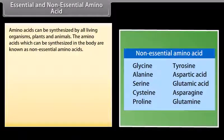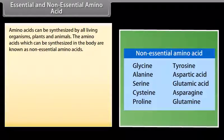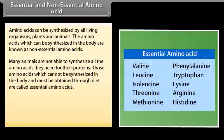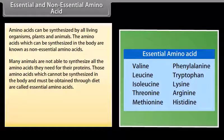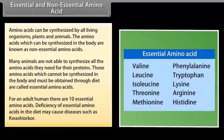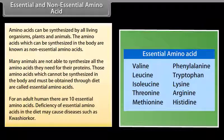Amino acids can be synthesized by all living organisms — plants and animals. Amino acids which can be synthesized in the body are known as non-essential amino acids. Those which cannot be synthesized in the body and must be obtained through diet are called essential amino acids. For an adult human, there are 10 essential amino acids. Deficiency of essential amino acids in the diet may cause diseases such as kwashiorkor.